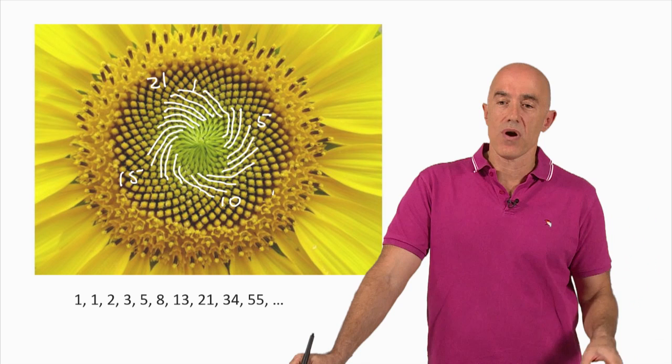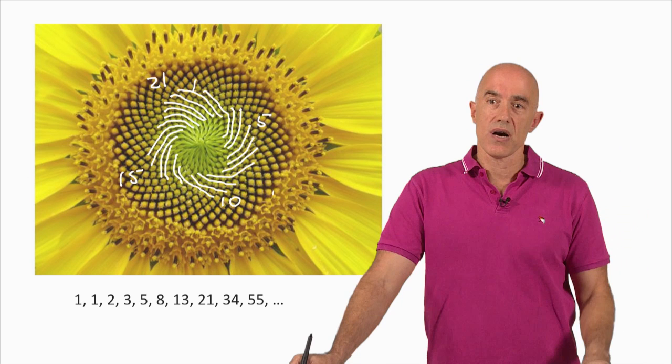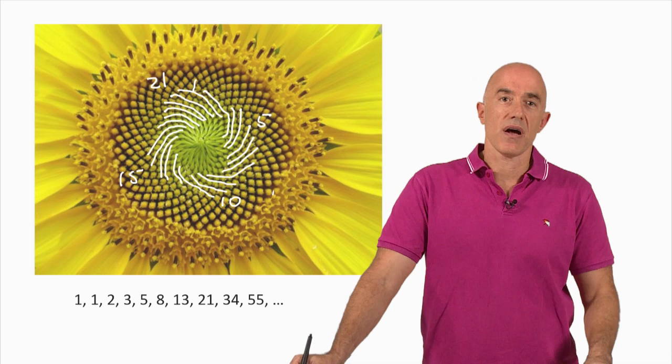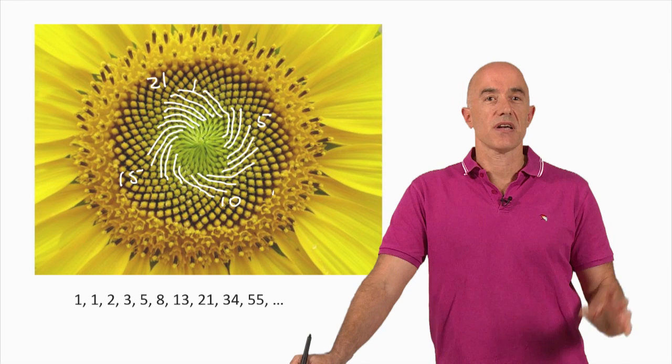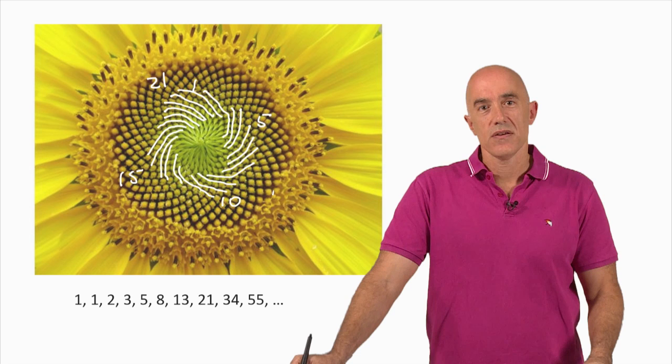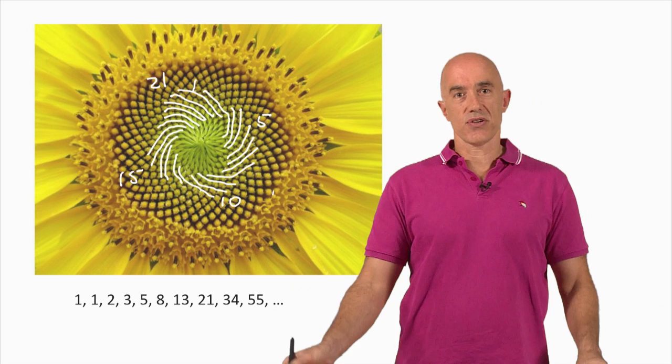Fibonacci number: one, one, two, three, five, eight, thirteen, twenty-one. So I've counted twenty-one counterclockwise spirals, thirty-four clockwise spirals. I think you find you must find this quite interesting. In this sunflower head now, we've discovered the Fibonacci sequence, two numbers, twenty-one and thirty-four.